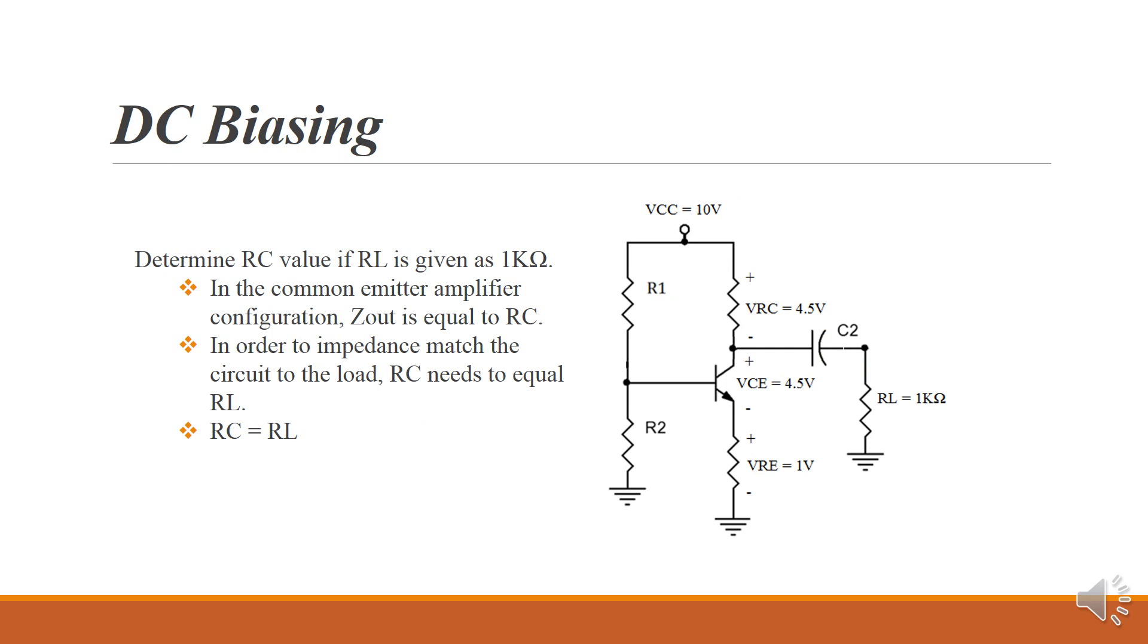For a common emitter amplifier, Zout is equal to RC. We don't know RC yet. We only know VRC, which is 4.5 volts. In order to be impedance-matched, we want our load to match our Zout. So in this case, if we know what our load is going to be, our RL, if we know that it's 1K, we now know that we want our RC to be equal to 1K.